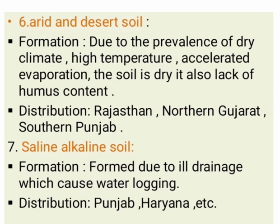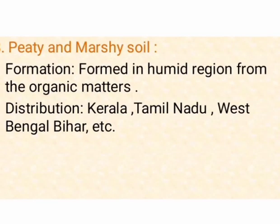Next we will move to Saline and Alkaline Soils. Formation of Saline and Alkaline Soils: it is formed due to ill drainage which causes water logging. Distribution areas of Saline and Alkaline Soils are Andhra Pradesh, Karnataka, Bihar, Uttar Pradesh, Haryana, Punjab, Rajasthan and Maharashtra.